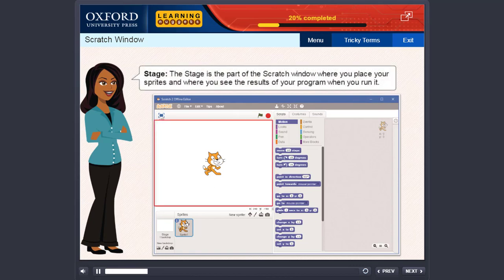Stage: The stage is the part of the Scratch Window where you place your sprites and where you see the results of your program when you run it.